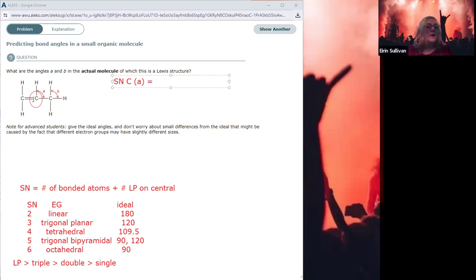So the number of bonded atoms is one, two, three, from the carbon-carbon bond, the carbon-hydrogen bond, and the carbon-carbon single bond. So the steric number is three, no lone pairs. I always like to write that in just so you can see that I've at least thought about them.